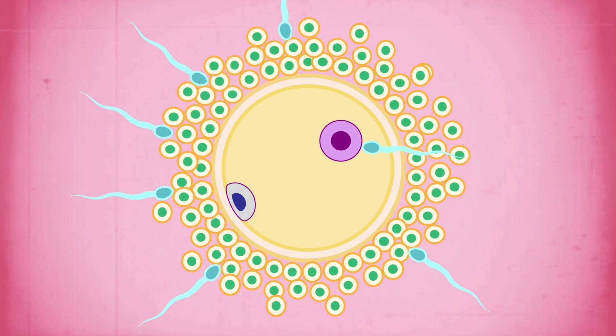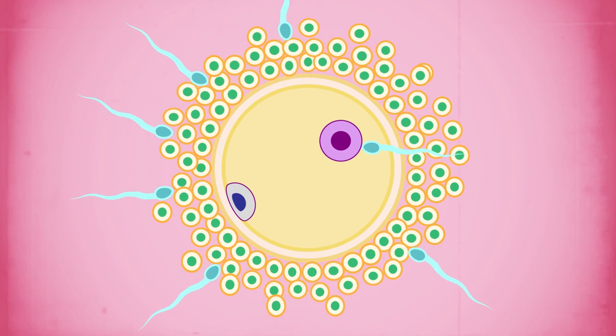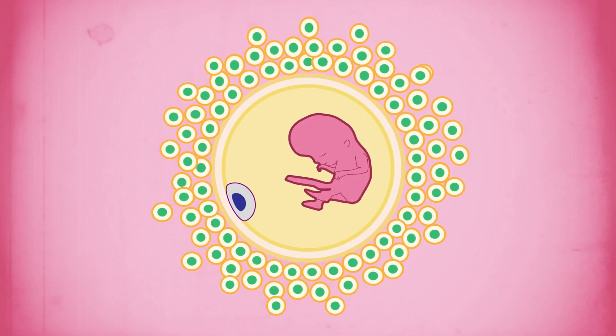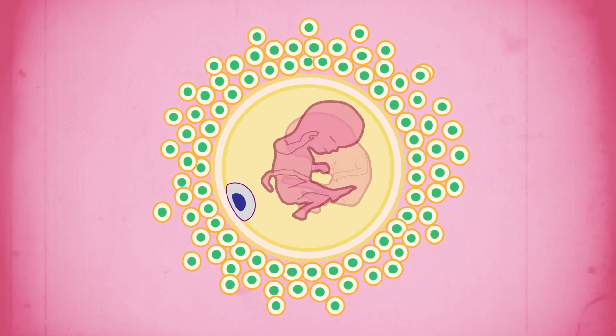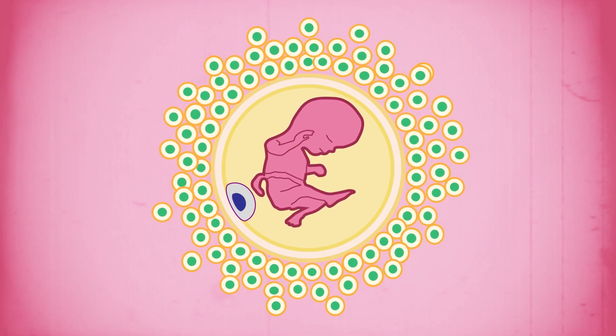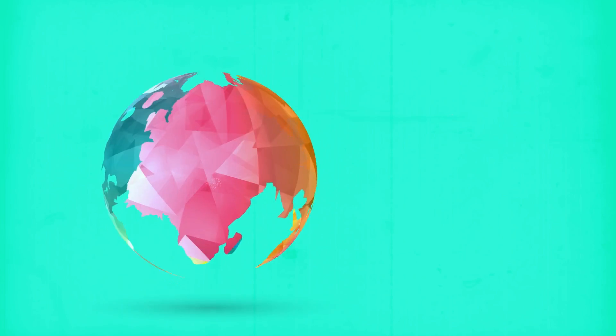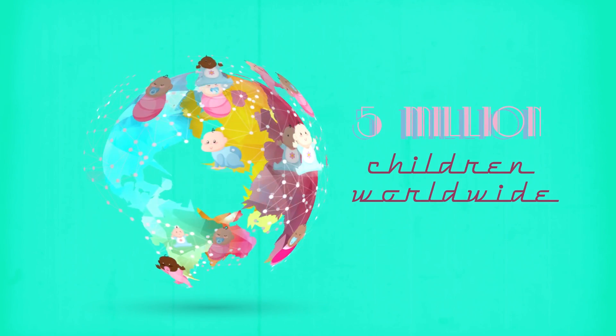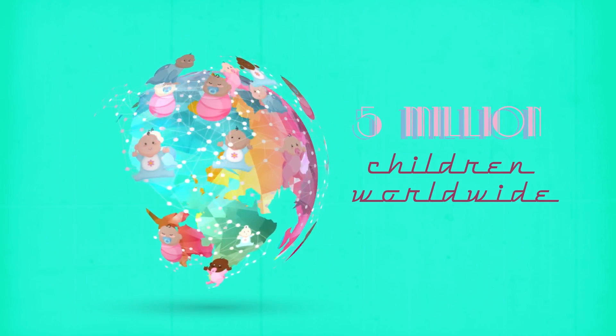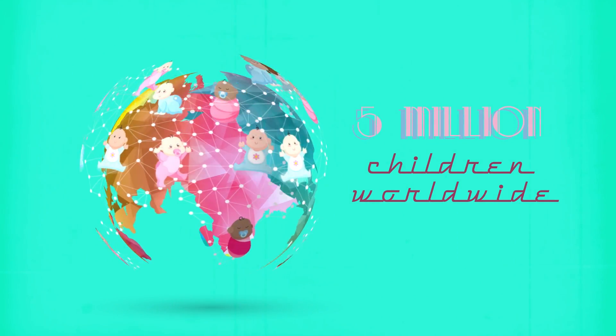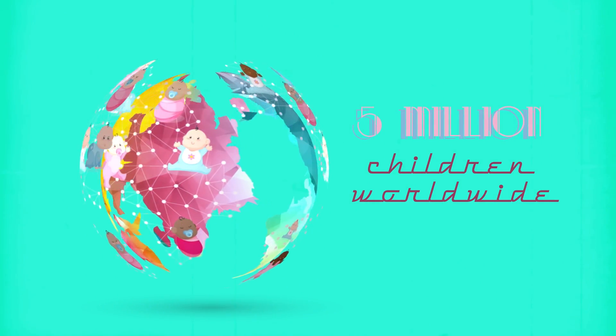Most babies are conceived by sperm fertilizing an egg and the fetus growing inside the mother's uterus. But sometimes this is not possible. One or both parents might have fertility problems, and for lots of different reasons, some parents are unable to have children. In fact, there are 5 million children worldwide born to parents who either couldn't or had difficulty producing babies.